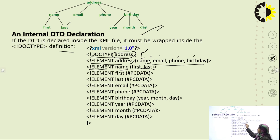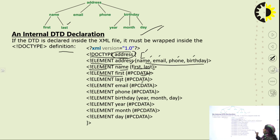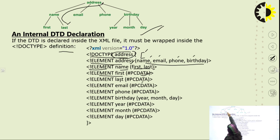Element 'first' contains PCDATA and element 'last' also contains PCDATA. PCDATA stands for Parsed Character Data, meaning this element contains document data which can be further parsed. So the address-to-name part of the tree is now fully declared.